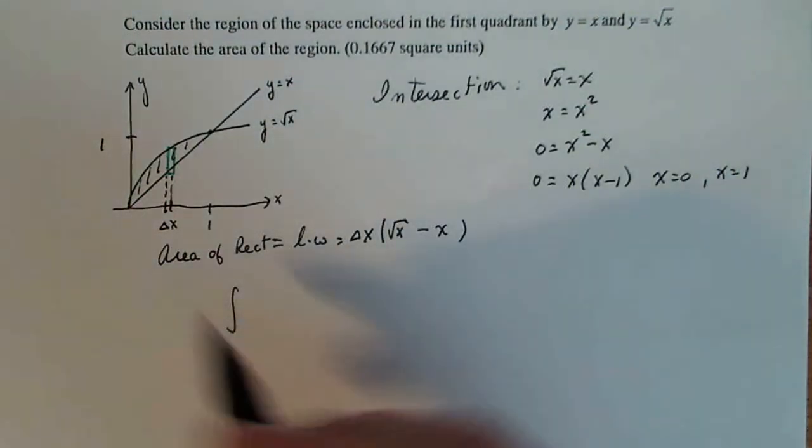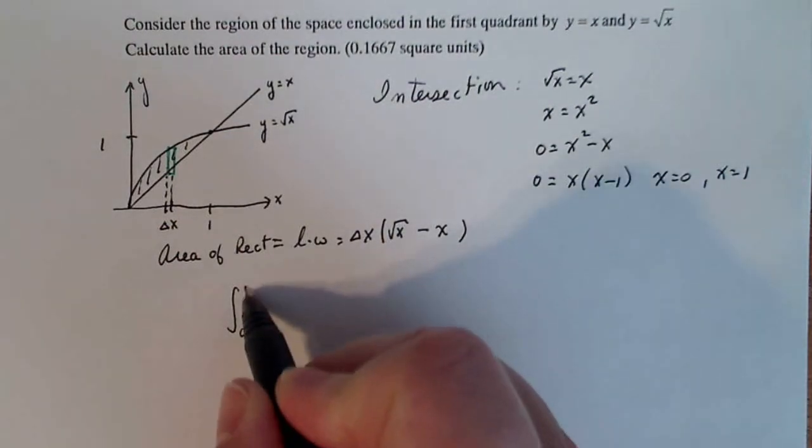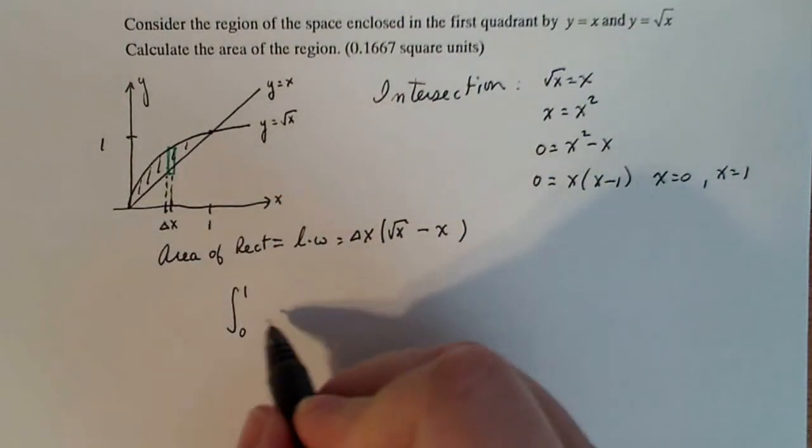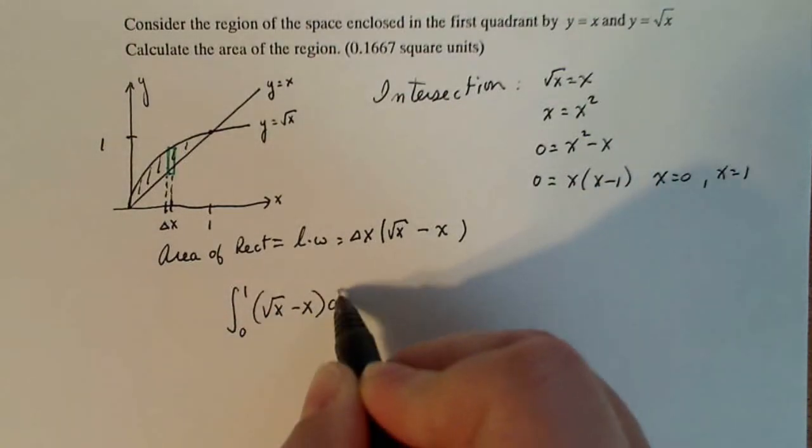All right, so now it looks like my bounds then, because of this and this, I will go from zero to one, adding up my rectangles of the function square root of x minus x dx.